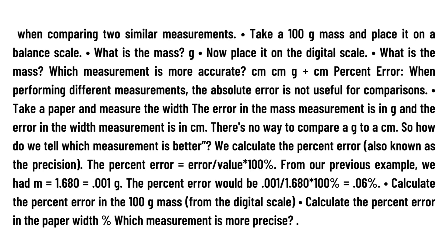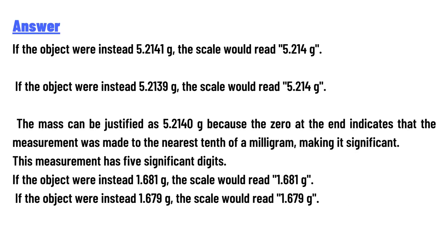Now for the answers: if the object were instead 5.2141 g, the scale would read 5.214 g. If the object were instead 5.2139 g, the scale would read 5.214 g. The mass can be justified as 5.2140 g because the zero at the end indicates the measurement was made to the nearest tenth of a milligram, making it significant. This measurement has five significant digits.